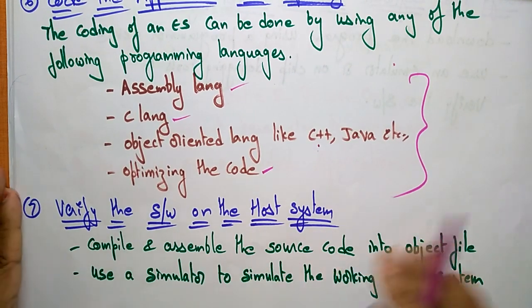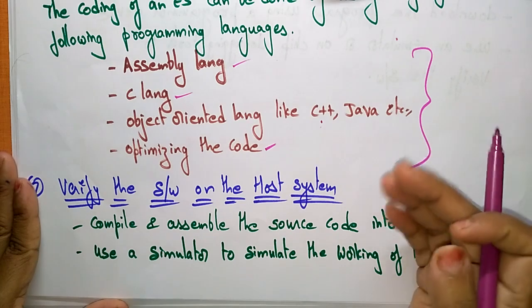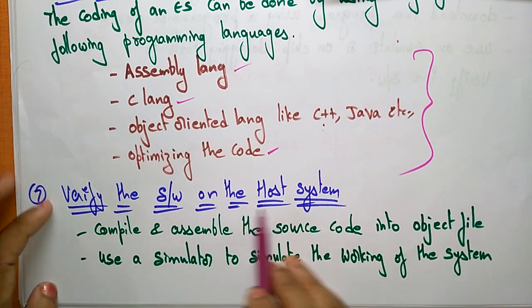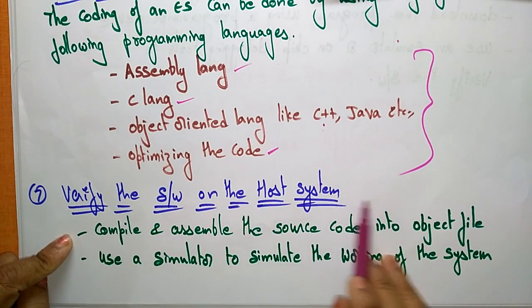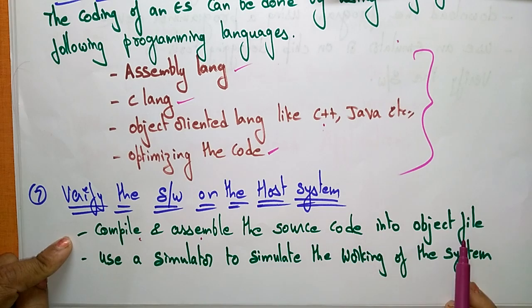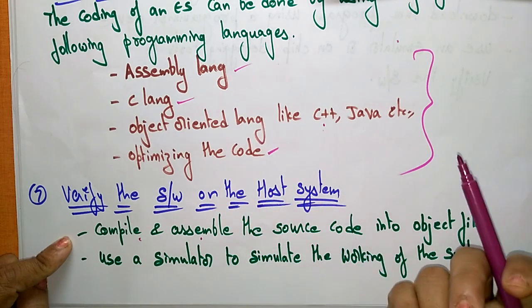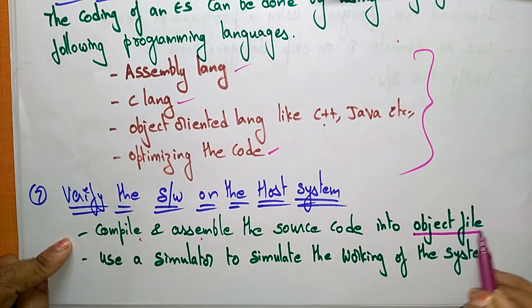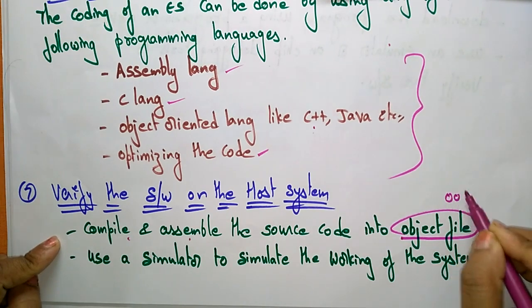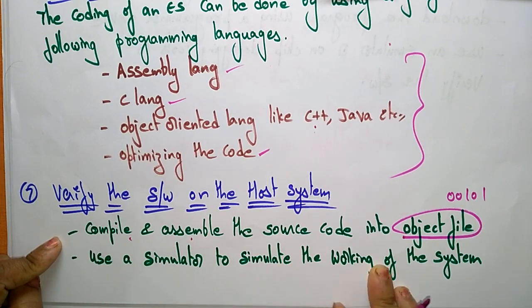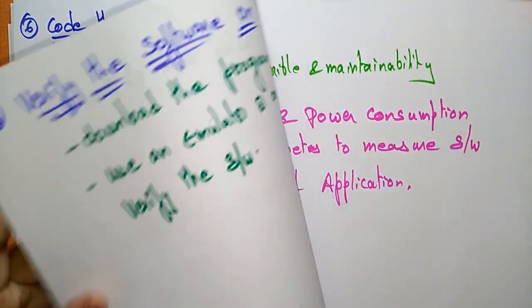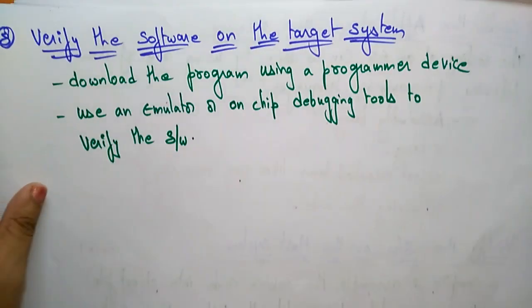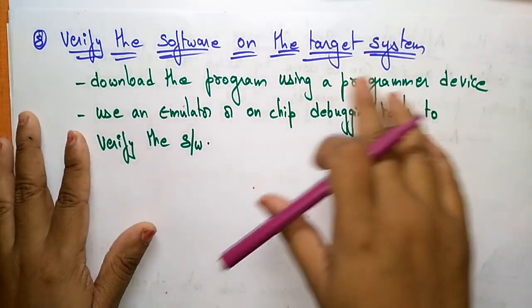The seventh step is to verify the software on the host system. This involves compiling and assembling the source code written in a high-level language into object files — zeros and ones. You also use a simulator to simulate the working of the system. These are the conditions you need to take care of while verifying the software on the host system.